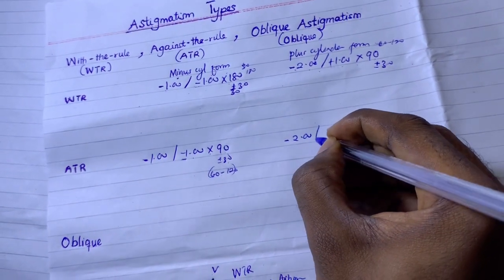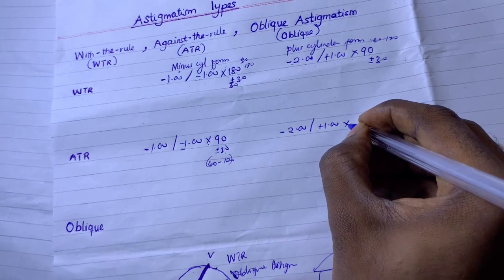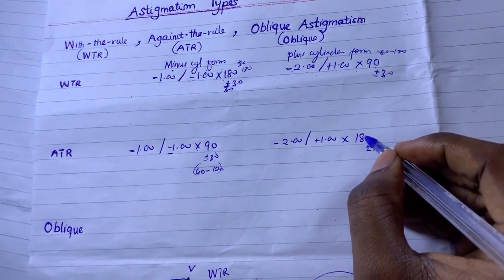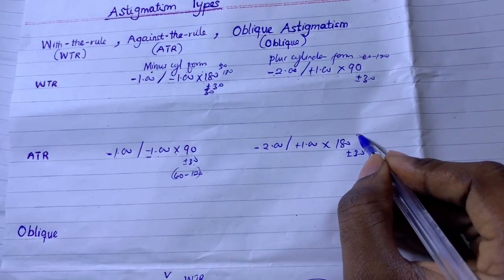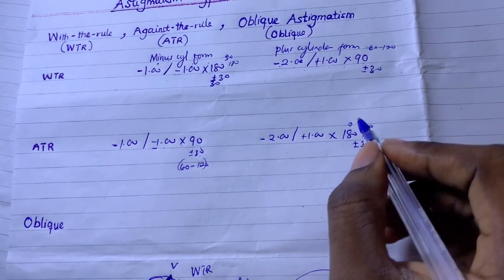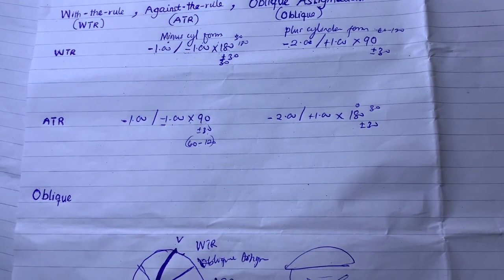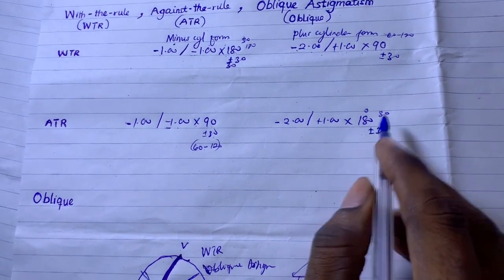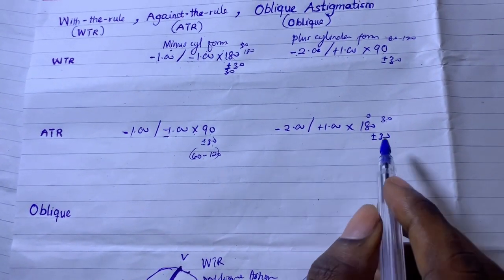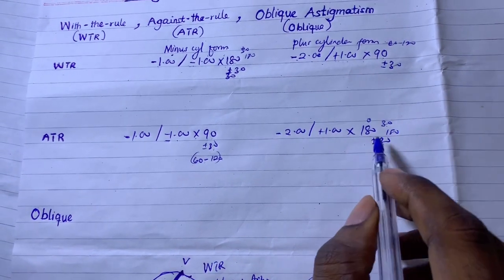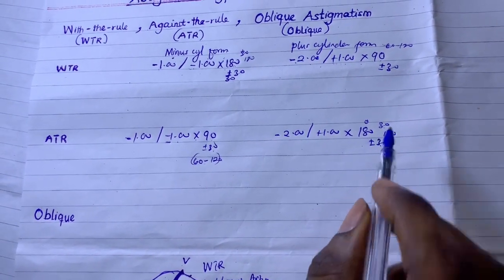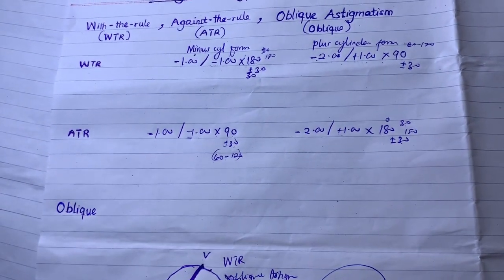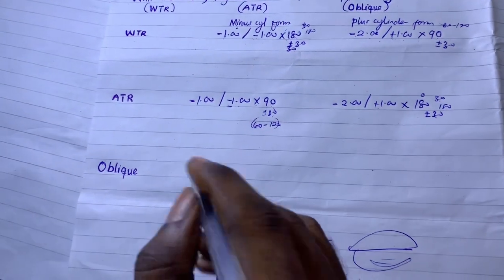For against-the-rule in plus cylinder form: minus two combined with plus one, axis 180 plus or minus 30. Adding 30 gives 30; subtracting 30 gives 150. So if the axis lies between 0 and 30, or 150 and 180, with a plus cylinder, it qualifies as against-the-rule astigmatism.